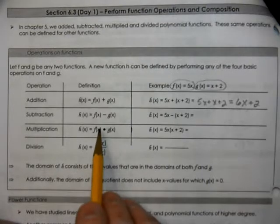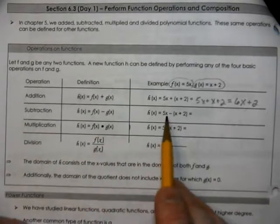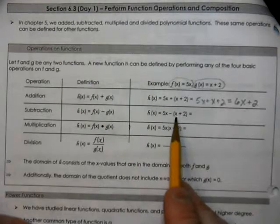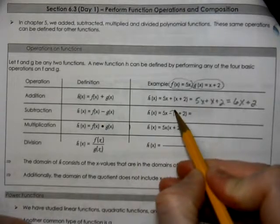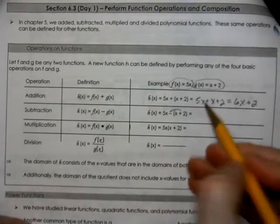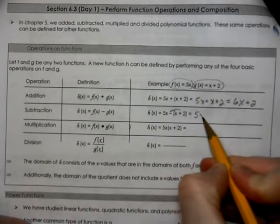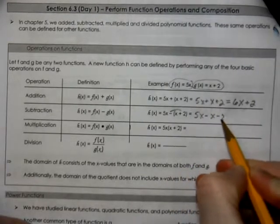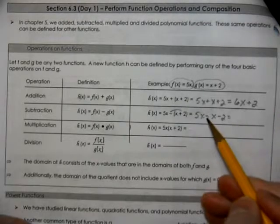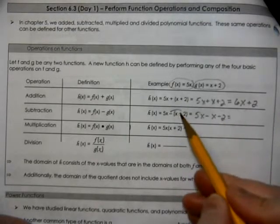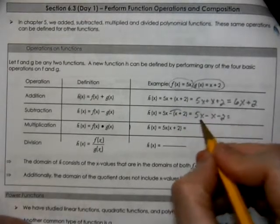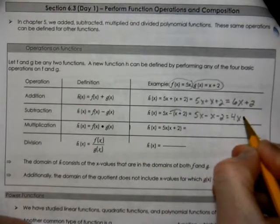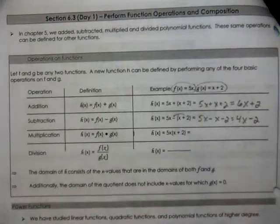If you're subtracting functions, we're going to take the f function minus the g function. To do that, we have to distribute our negative through, which gives us 5x minus x minus 2. That's a common mistake — not putting your negative with the 2. So we're going to have 5 minus 1, which is 4x minus 2.